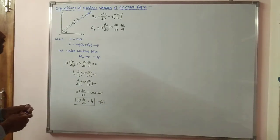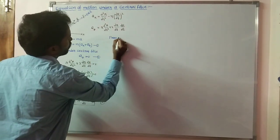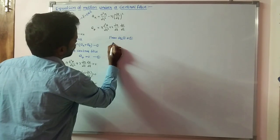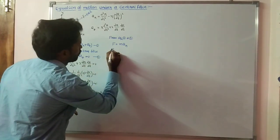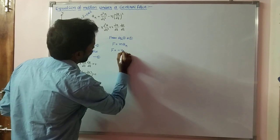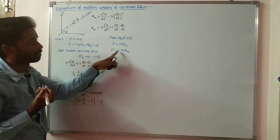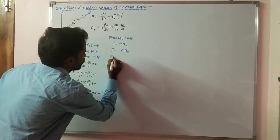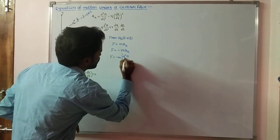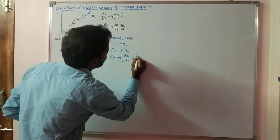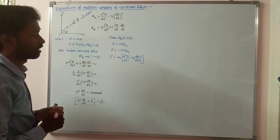Our aim is to find the equation of motion of a particle under a central force from equations 1 and 2. From equations 1 and 2, our central force equation gives F equal to m·Ar. Now, F can be written as minus m·Ar, where minus represents that our central force is an attractive force. So F equal to minus m·Ar, where Ar is the radial acceleration, equal to d²r/dt² minus r·(dθ/dt)². This is the equation of motion of a particle under a central force.